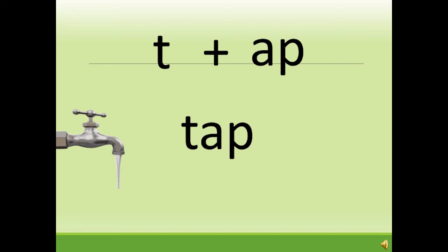Children, please remember that we are not going to break it. Whenever you see A and P together next to each other, you are going to read it as 'ap.' So the word here is t-ap: tap.